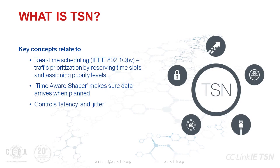Going on from that, there's another concept key to the whole idea: real-time scheduling. How this works is that you have something called a time-aware shaper, which prioritizes different types of traffic on the network by reserving time for that traffic to travel across the network and defining how important it is in relation to other types of traffic. In real terms, your essential data — related to the actual control of your process — gets there when it's supposed to, while less important stuff like video frames from a vision system takes second place. This gives you good control over latency and jitter — latency being the time it takes for traffic to travel across the network, and jitter being the variation in when that traffic may arrive.